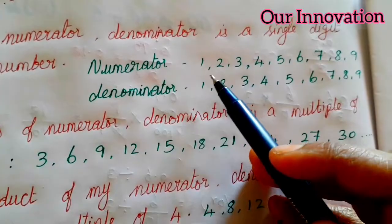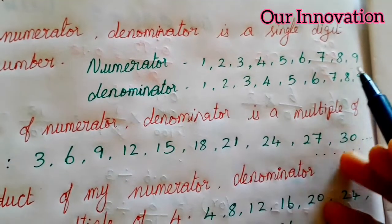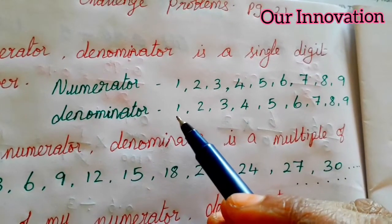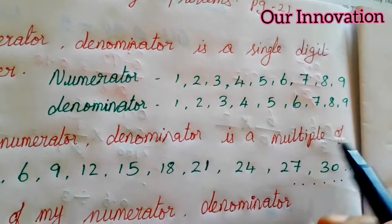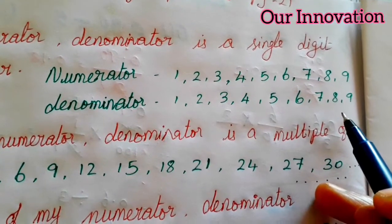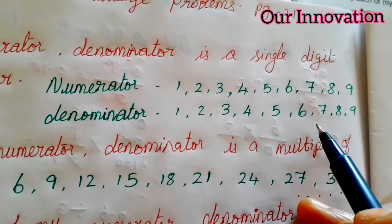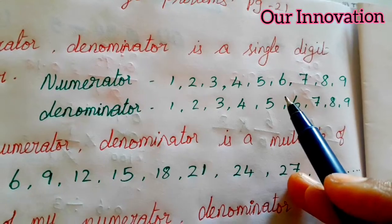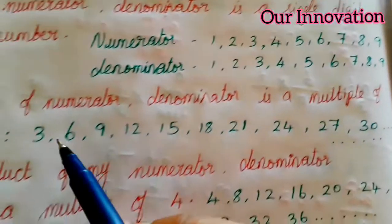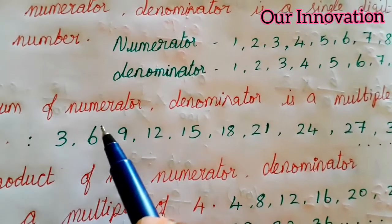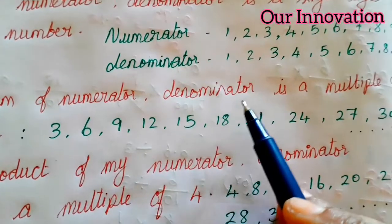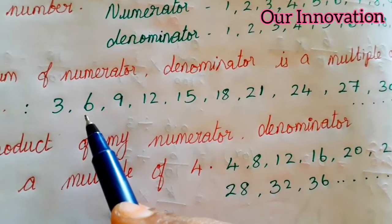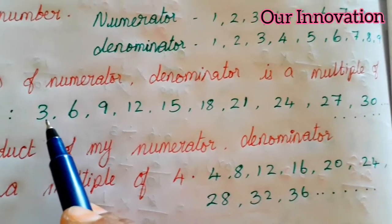So what are the possibilities? Numerator and denominator is 1 to 9. And the denominator is a number up to 9. So numbers are single digit numbers. Next, sum of numerator and denominator is a multiple of 3.